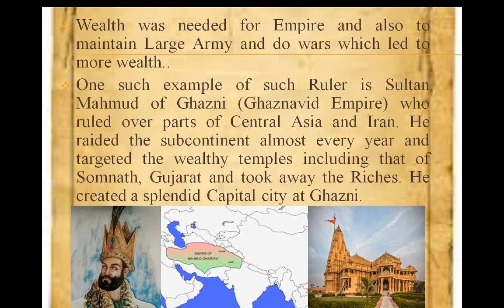Why did they need this gold and silver? They needed wealth for the prosperity of the empire and to make their army bigger and stronger, so they could acquire more kingdoms and become more powerful and wealthy. This was like a cycle: if you have wealth, you will have a big army; if you have a big army, you will conquer more kingdoms; and then you will acquire more wealth and maintain an even bigger army. This cycle would go on.